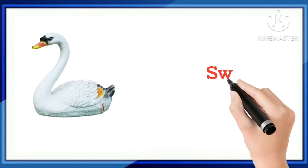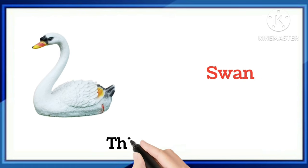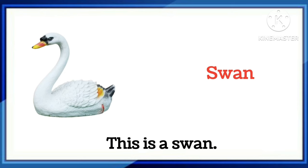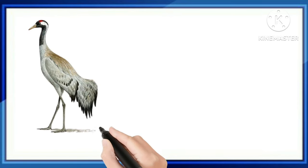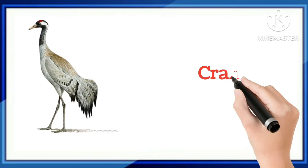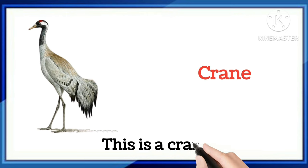Tell me, which word is this? This is a swan. Say with me: this is a swan. And which word is this? This is a crane. Say with me: this is a crane.